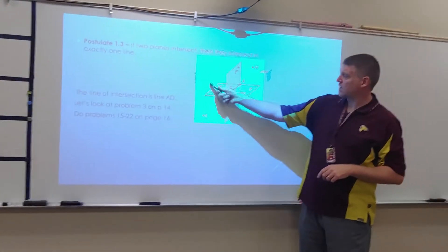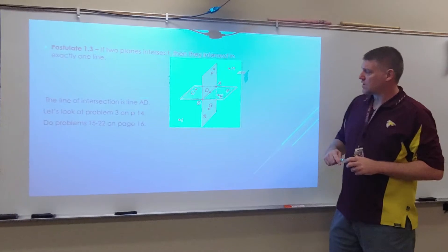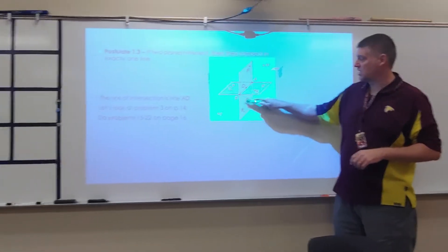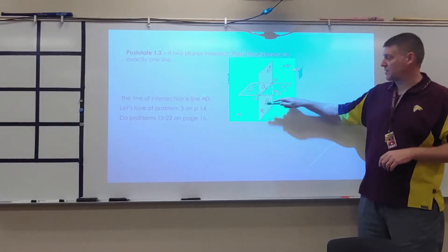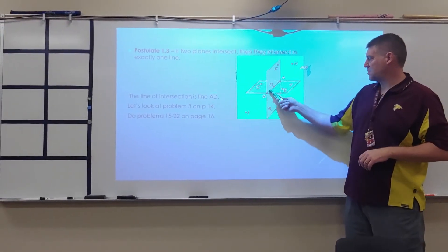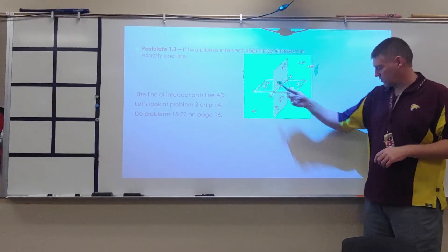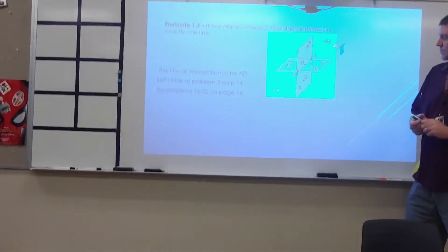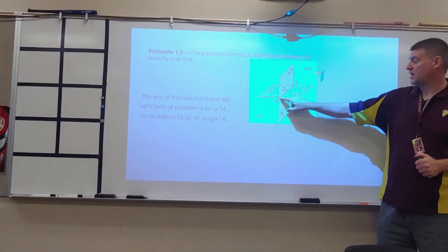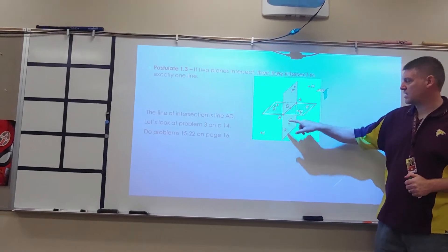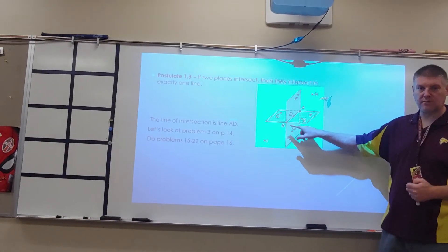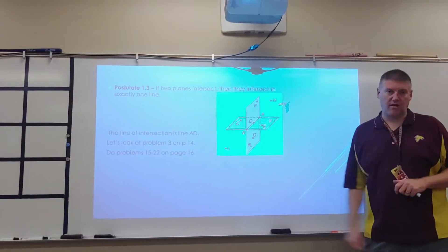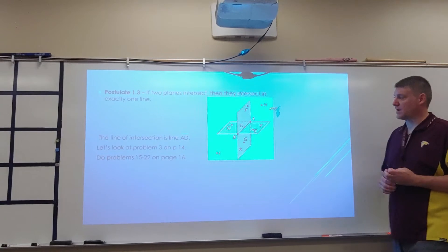Here's another item. I have plane FBG right here, going up and down. And I have plane CBE going horizontally. These two planes, where they intersect, is right along this line here. I could name this line AB, DA, DB, BA, all kinds of different things. But they intersect right along that line.